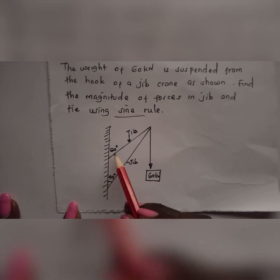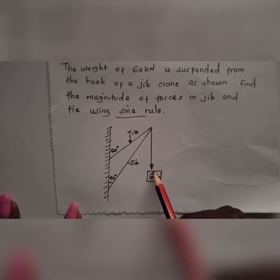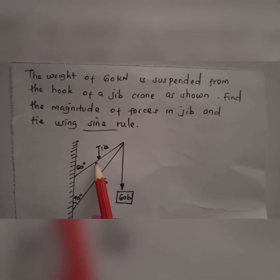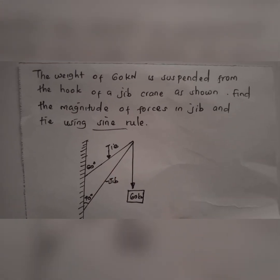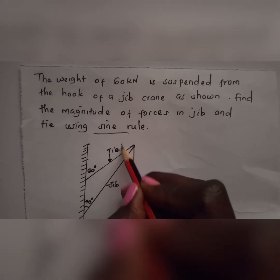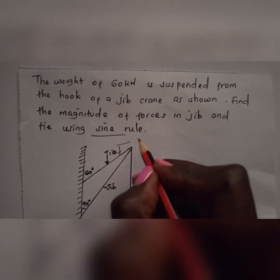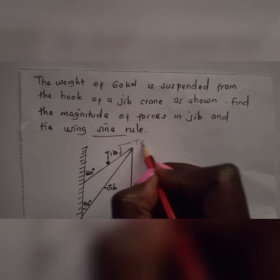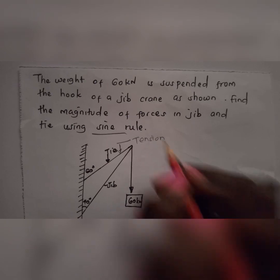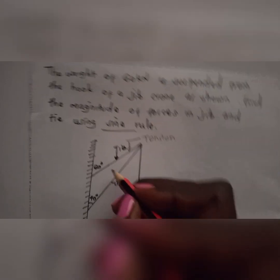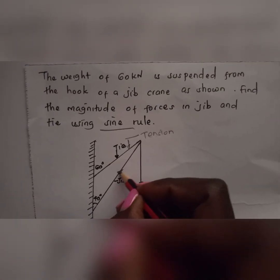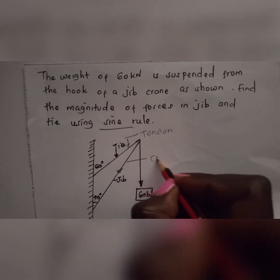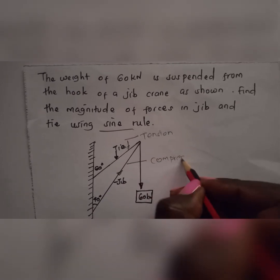We have a load of 60 kilo Newtons, the tie, and the jib. From the diagram you can see that the load of 60 kilo Newtons is applied downwards. That tells us that the tie will tend to stretch apart, so the tie will undergo tension force. The jib undergoes compression, so it will be in that direction — under compression.